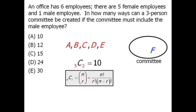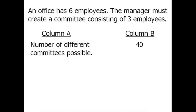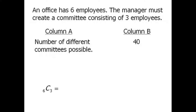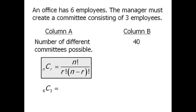We have 6 employees and the manager must choose 3 of them for a committee. The order in which employees are selected does not matter — selecting person A then B then C is the same as B then A then C. Since order doesn't matter, this is a combinations question. We have 6 employees and must choose 3, which is 6C3. Applying the formula, 6C3 equals 20. Column B is greater than column A, so our answer is B.